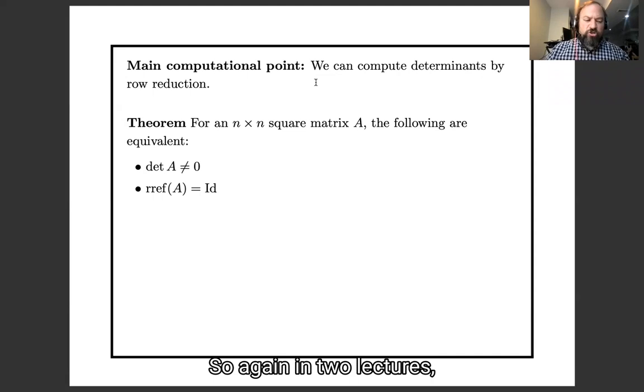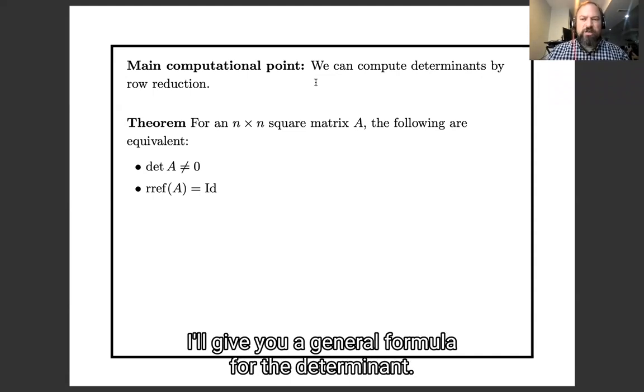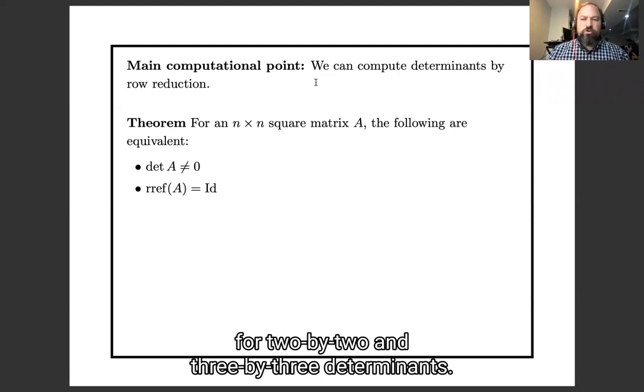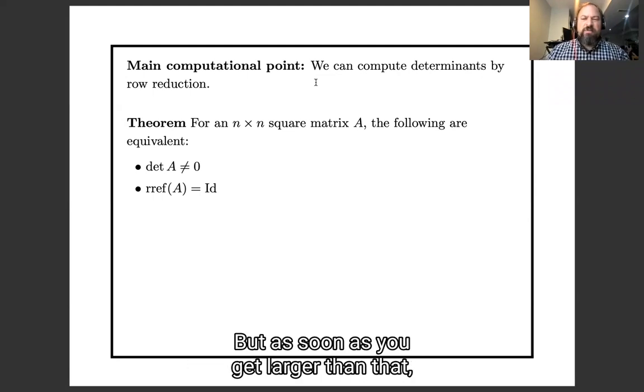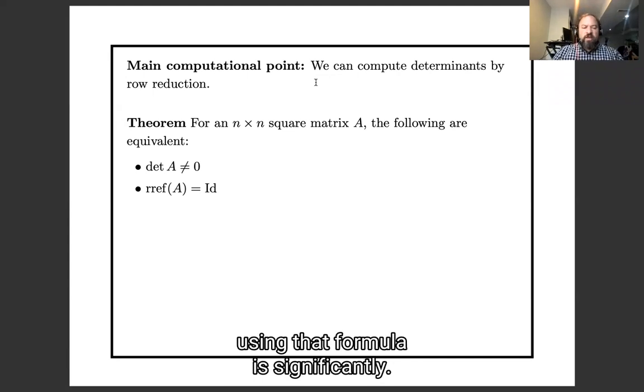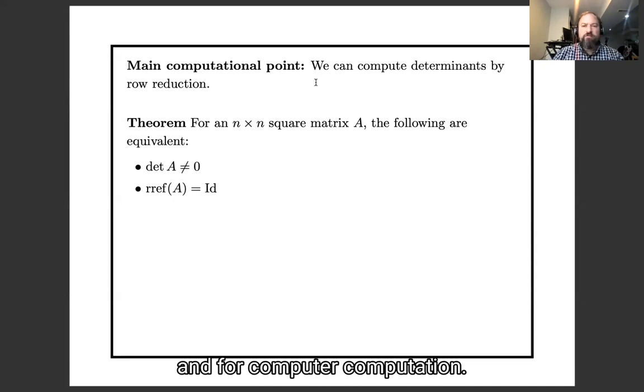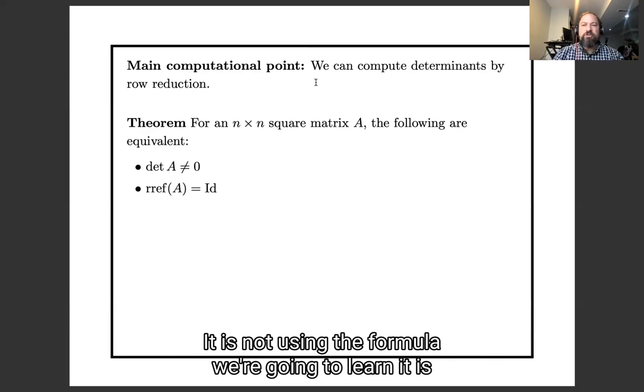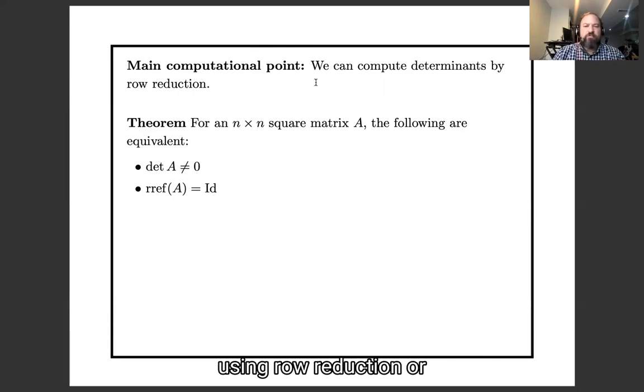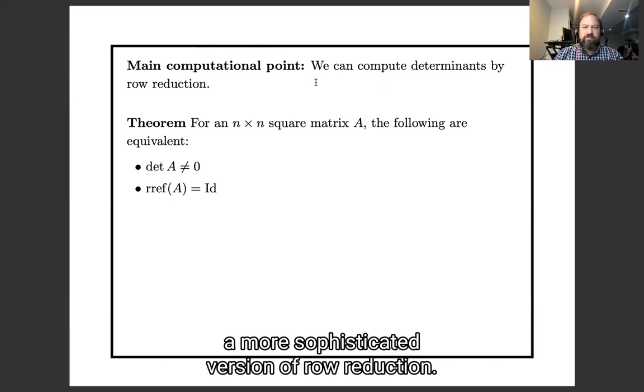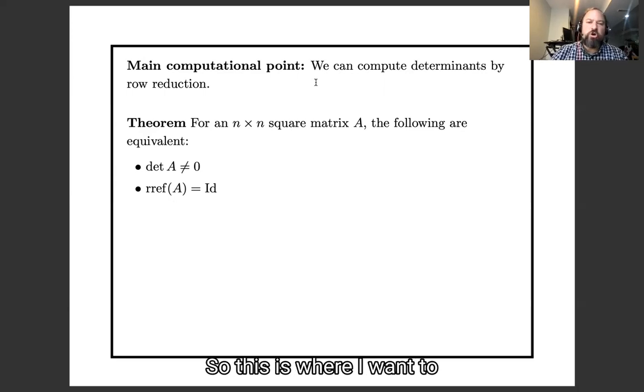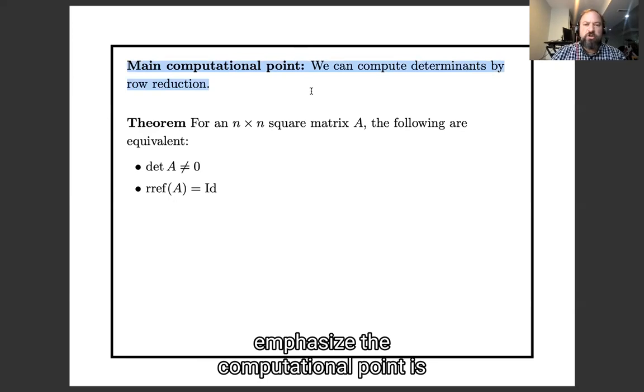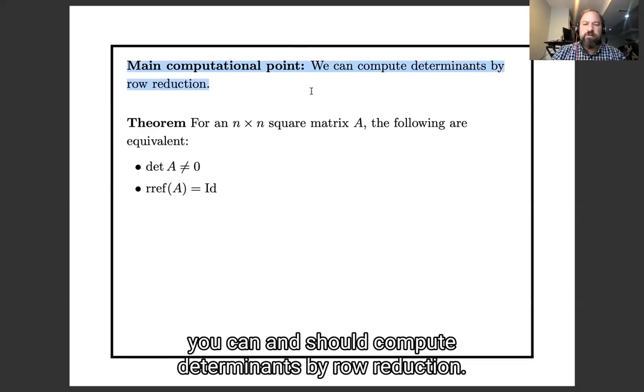So again, in two lectures, I'll give you a formula, a general formula for the determinant, and that formula will be fine for 2 by 2 or 3 by 3 determinants, but as soon as you get larger than that, using that formula is significantly slower than doing row reduction. And that's true both for hand computation and for computer computation. When MATLAB or Mathematica or NumPy or anything like that computes a determinant, it is not using the formula we're going to learn, it is using row reduction or a more sophisticated version of row reduction. So this is where I want to emphasize as a computational point is, you can and should compute determinants by row reduction.